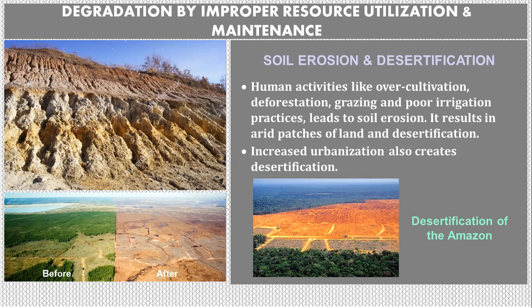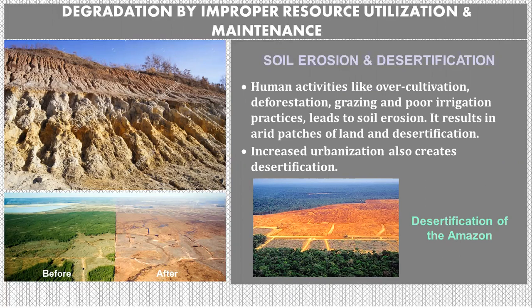Increased urbanization also creates desertification. The figures show before and after impacts of population growth, overgrazing, poor irrigation practices, and deforestation leading to desertification.